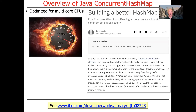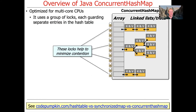ConcurrentHashMaps are heavily optimized for multi-core processors. One thing they do is use a group of locks, each guarding separate entries in the hash table. In the latest versions, they use compare-and-swap operations on the element at the beginning of each bucket list or bucket tree in the hash table, which helps minimize contention.